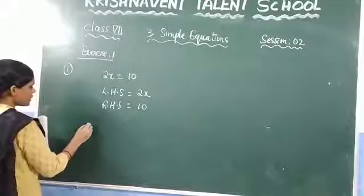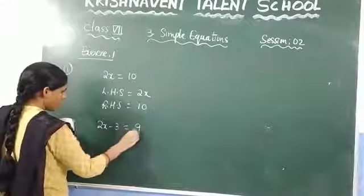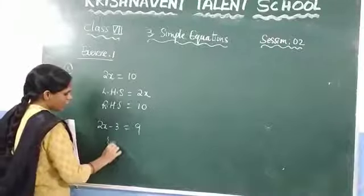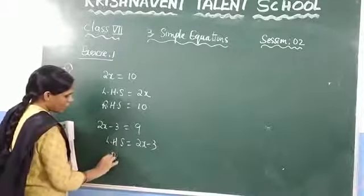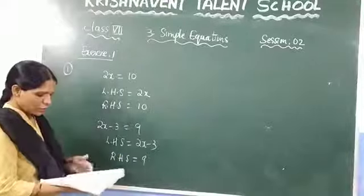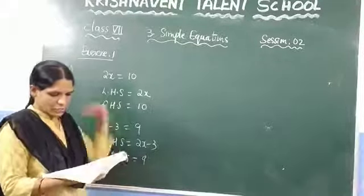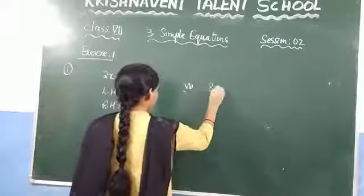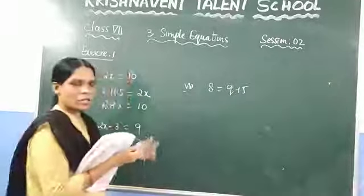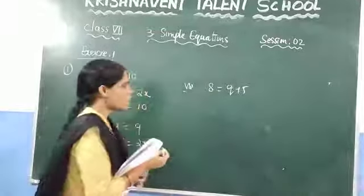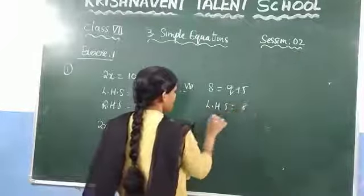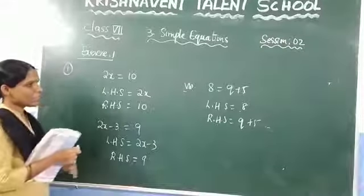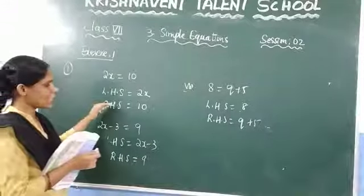For the next problem, 2x minus 3 is equal to 9: the LHS is 2x minus 3 and the RHS is 9. There are many such problems given. For the last question — number 8 — which is 8 is equal to Q plus 5: the LHS is 8 and the RHS is Q plus 5. So in each case, you just identify what is on the left and right side of the equality sign.